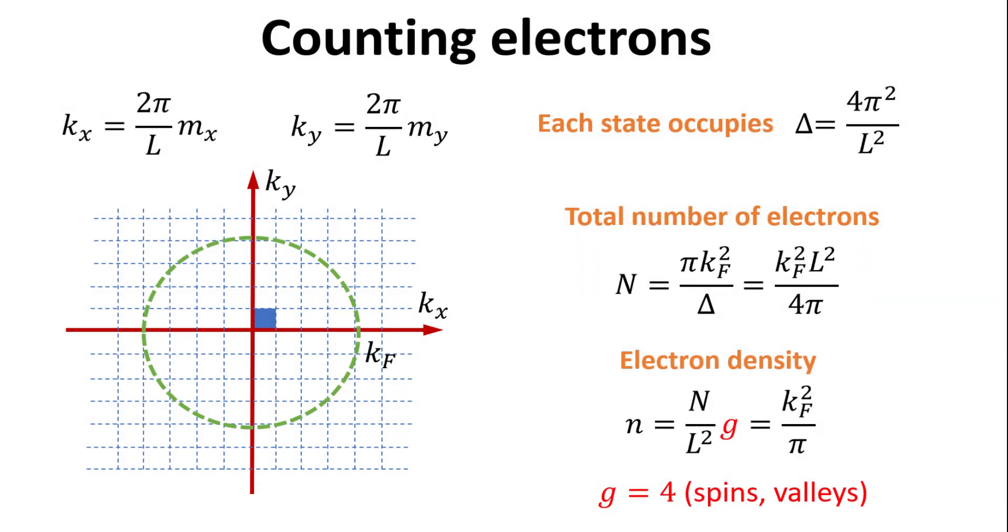The electron density, n, is just the number of electrons divided by L squared. In graphene, there is a total of 4 Dirac cones, 2 for the valleys, and 2 for spins. Accounting for this degeneracy of 4, we arrive at our result, n equals kf squared divided by π. This is the zero temperature electron density in terms of the Fermi wave vector.